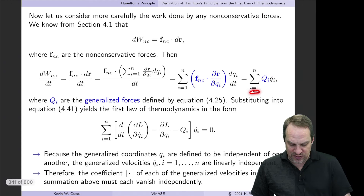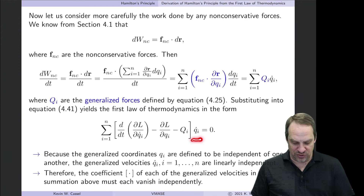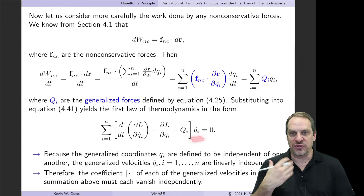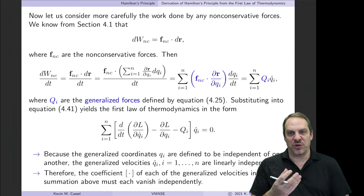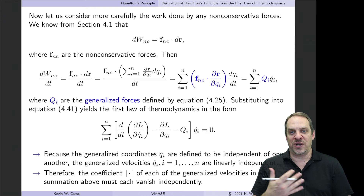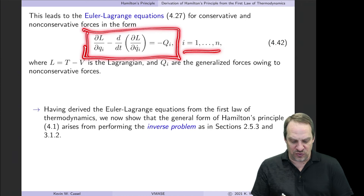Substituting back, we have the sum of [d/dt(∂L/∂q̇ᵢ) minus ∂L/∂qᵢ minus Qᵢ] times q̇ᵢ equals zero. Every term has a q̇ᵢ factor. Because the generalized coordinates qᵢ are independent of each other, the only way this sum can equal zero is if each expression in square brackets is individually zero.